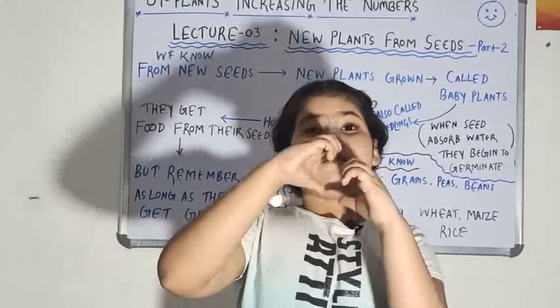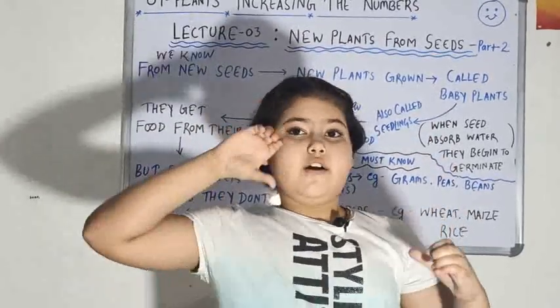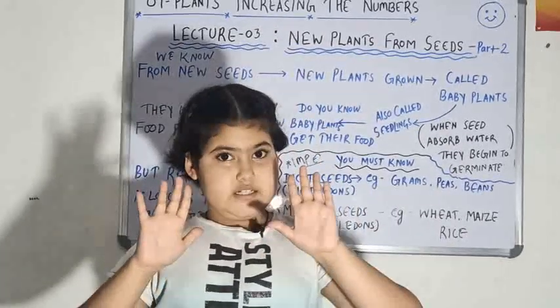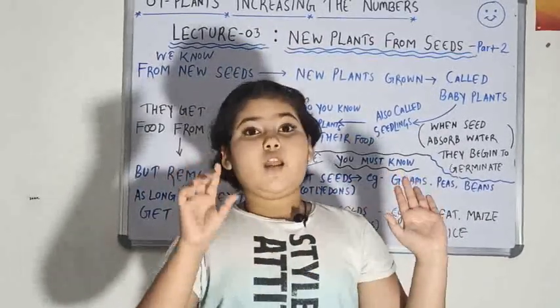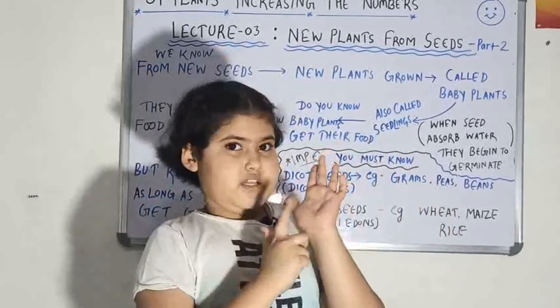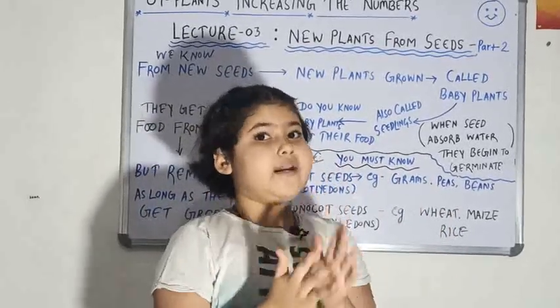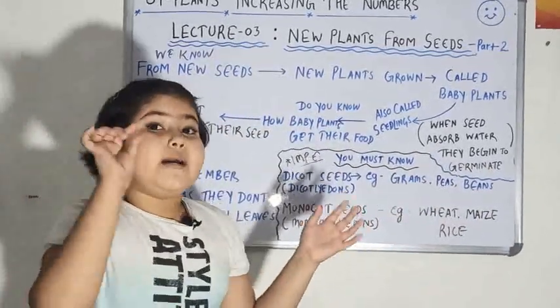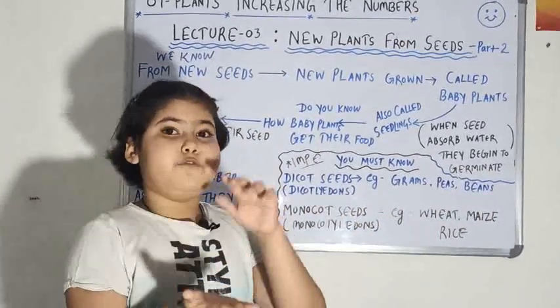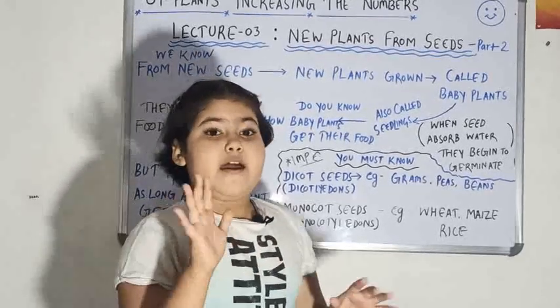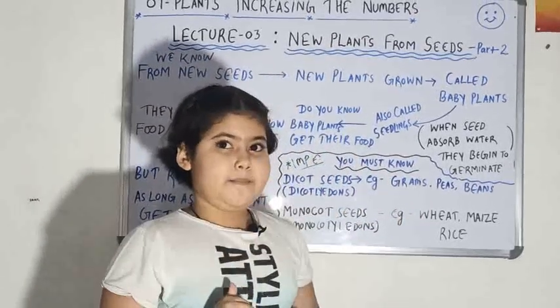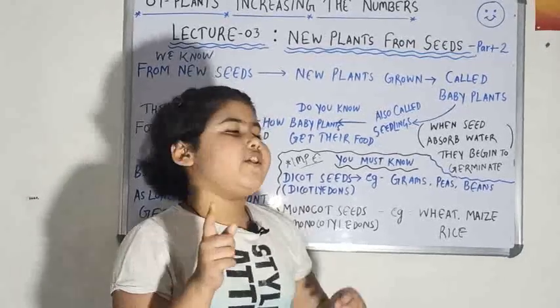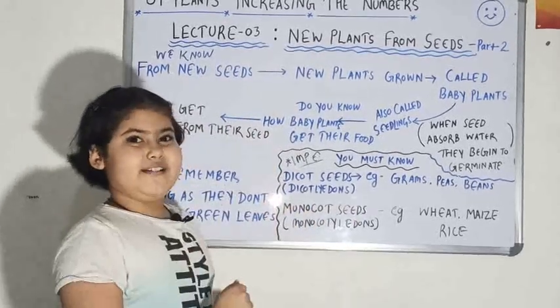So when we will separate the gram, one seed leaf will be this and another seed leaf will be this. So in the first seed leaf there will be some food, and in the second seed leaf there will also be some food. So the particular plant takes the food from these seed leaves. And when there are two seed leaves in a particular seed it is known as dicotyledons.